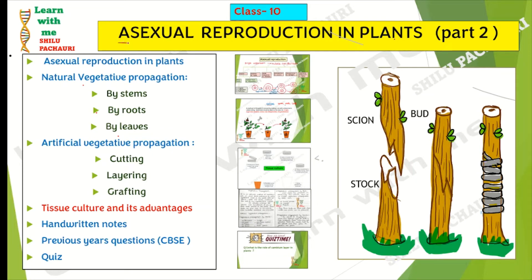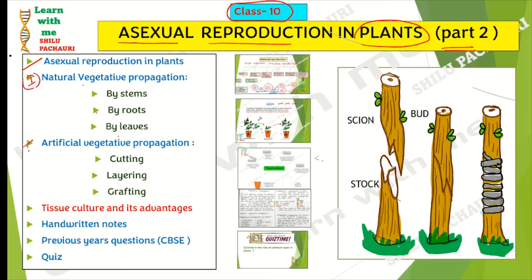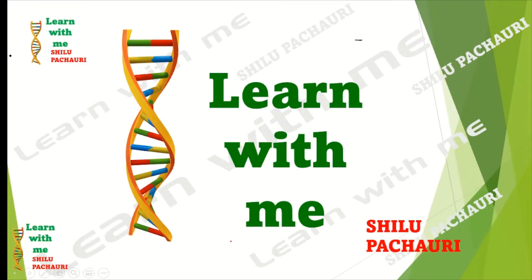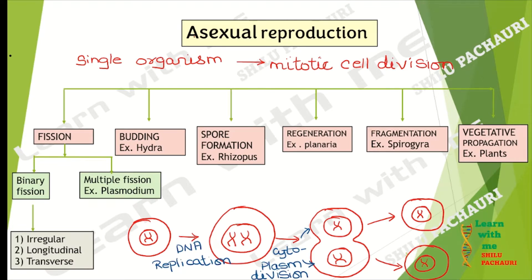Hello everyone! In this video we are going to discuss asexual reproduction in plants — this is the second part. Today we will discuss the two types of asexual reproduction: natural and artificial. We will use animated videos, discuss tissue culture and its advantages, provide handwritten notes, discuss previous year questions, and there will be a quiz. Welcome to the channel 'Learn with Me'. In our previous video, we discussed asexual reproduction.